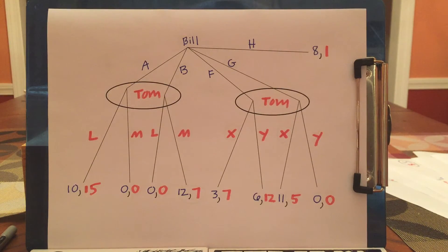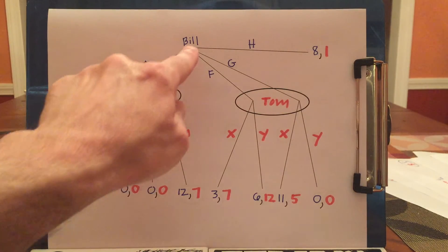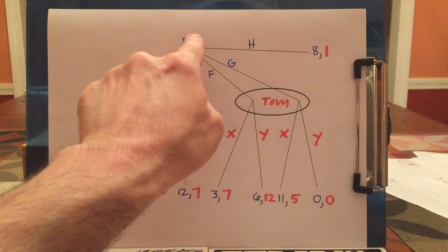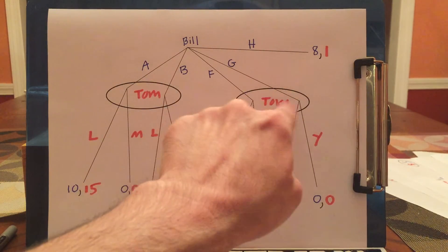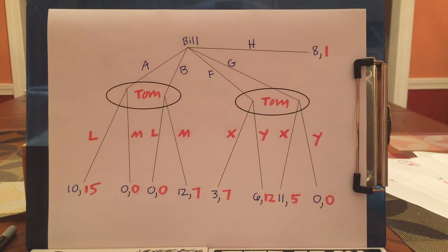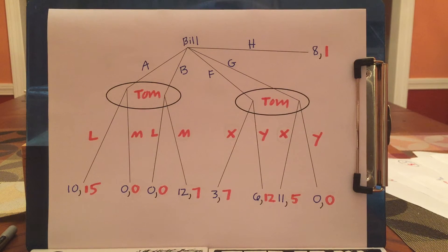Let's go on to a more complicated game. In this game, if Bill picks A or B, Tom is told he's somewhere in this information set. If Bill picks F or G, Tom is told he's somewhere in this other information set. And if Bill picks H, the game's over: Bill gets 8, Tom gets 1, Tom never moves. So Tom, if he gets to move, knows a little bit but doesn't know everything. What's going to happen in this game? Why don't you pause the video and figure it out?